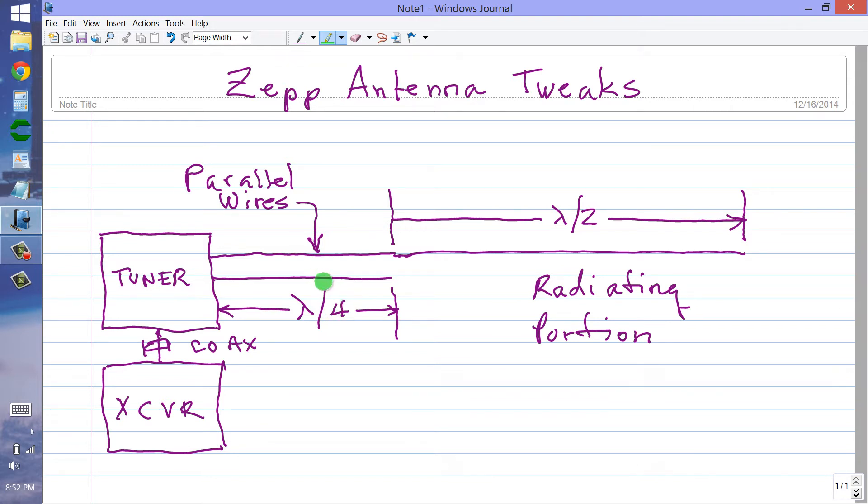Now this doesn't have to be a quarter of a wavelength if you have a good tuner. But if all you have, for example, is a Ballen coil instead of a tuner so that you can't adjust the impedance accordingly, then you do need to make sure that this is a quarter of a wavelength of a transmission line with a certain characteristic impedance, Z sub 0.